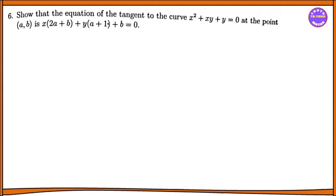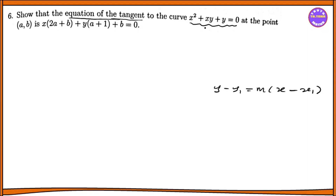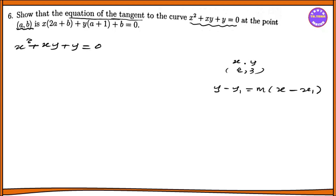The equation of the tangent line is: y minus y1 equal to m into x minus x1. We have to find the point. The point here is (2, 3), so x1 = 2, y1 = 3.